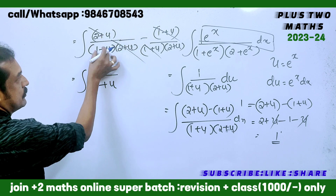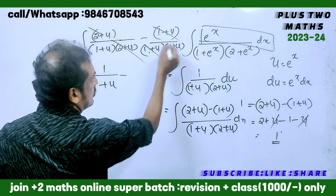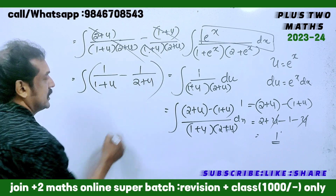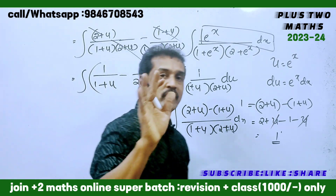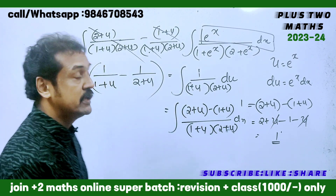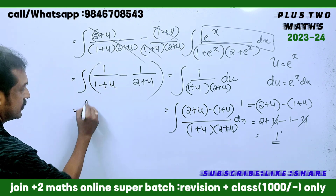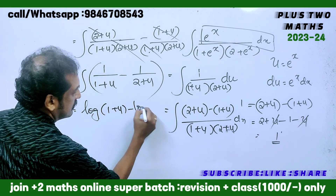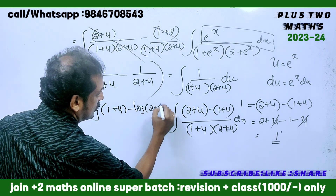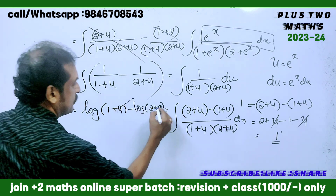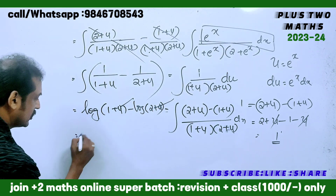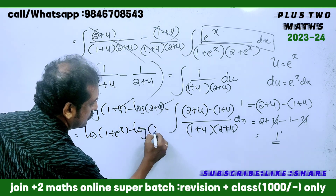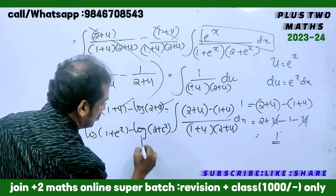Here are 2 plus u, here are 1 by 1 plus u, here are 2 plus u, minus log of 2 plus u. Substituting u with e raise to x, that is log of 1 plus e raise to x, minus log of 2 plus e raise to x, plus c.